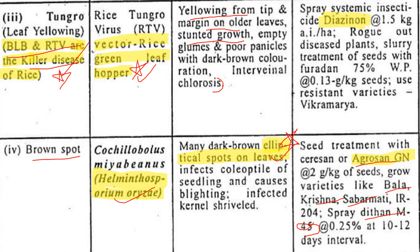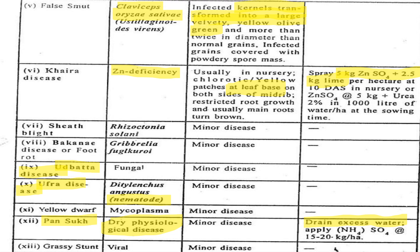Next, false smut — we have already studied smut. The causal organism is Claviceps and Ustilaginoidea virens, and the characteristic sign is kernels that are large, velvety, yellow, olive, or green in color.